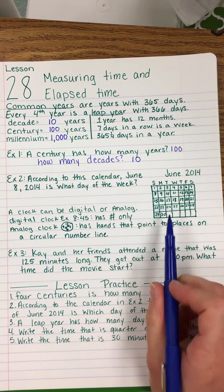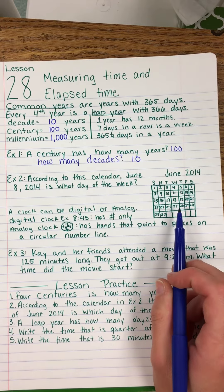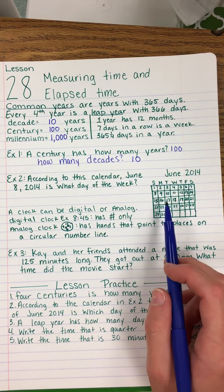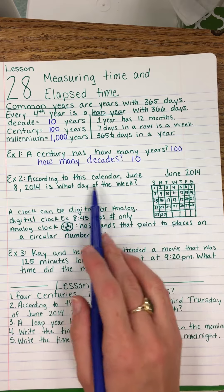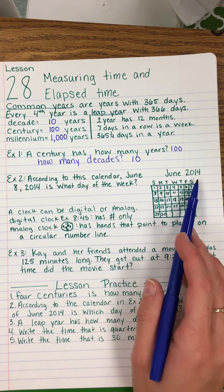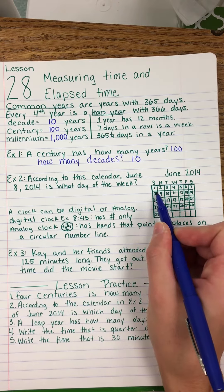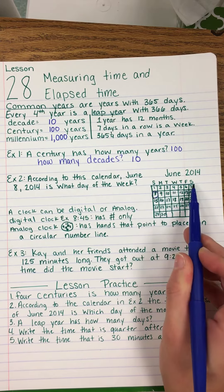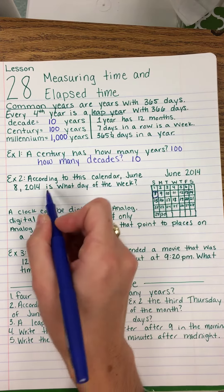Example two. According to this calendar in June 2014, June 8th is what day of the week? You find June 8th, and that is on a Sunday. The other S is Saturday, but our weeks start with Sunday, so June 8th is a Sunday.